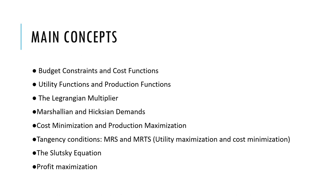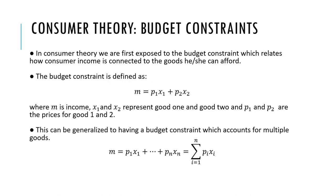In consumer theory, we're first exposed to the budget constraint, which relates how consumer income is connected to the goods he or she can afford. The budget constraint is defined as M equals P1·X1 plus P2·X2, where M is income, X1 and X2 represent good one and good two, and P1 and P2 are the prices of good one and good two.